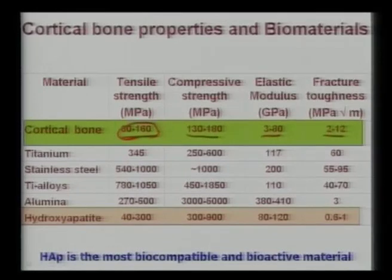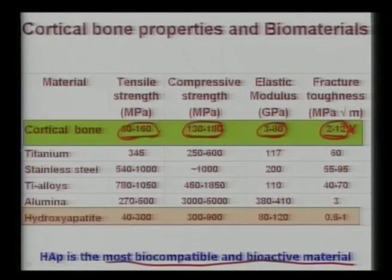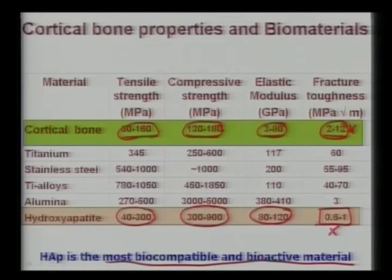I put a star on fracture toughness because I want to highlight that pure hydroxyapatite — the most biocompatible and bioactive material among all investigated materials — matches most cortical bone properties: it has high tensile strength, better compressive strength, and elastic modulus tunable between 80–140 GPa. However, the fracture toughness of pure hydroxyapatite is only 0.6–1 MPa√m, which does not even meet the lower bound of cortical bone fracture toughness of about 2 MPa√m. Therefore, the fracture toughness of hydroxyapatite must be improved.